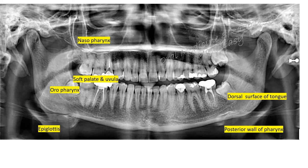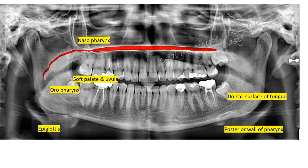This radiopaque structure seen here is the hard palate. The hard palate ends posteriorly as the soft palate, which then has a small extended structure called the uvula. This is the soft palate and this is the uvula. Here also you can trace the soft palate and uvula.